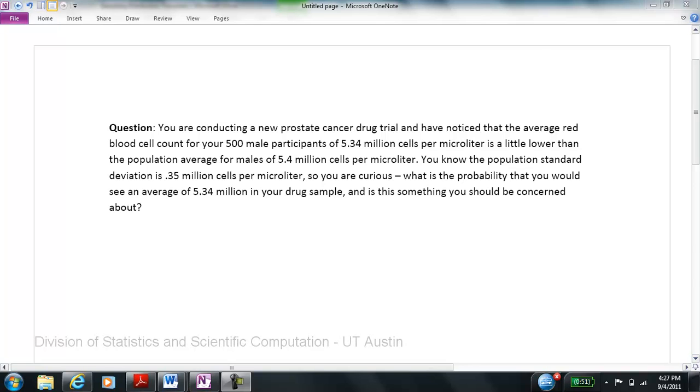This video is about sampling distributions. Let's examine a question. You are conducting a new prostate cancer drug trial and have noticed that the average red blood cell count for your 500 male participants of 5.34 million red blood cells per microliter of blood is a little lower than the population average for males of 5.4 million cells per microliter. You know the population standard deviation is 0.35 million cells per microliter. So you are curious, what is the probability that you would see an average of 5.34 million in your drug sample? And is this something you should be concerned about?